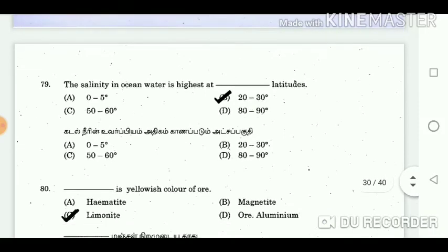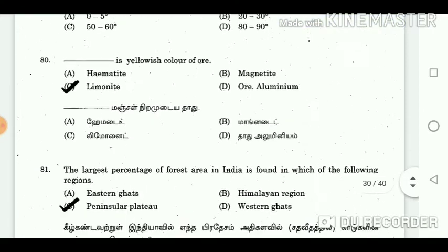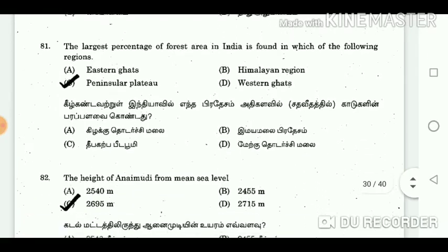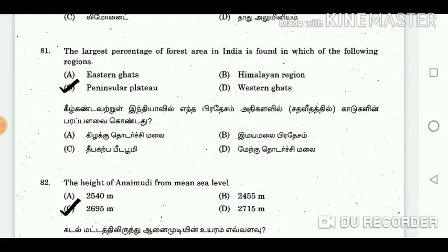Question 79: The salinity in ocean water is highest at which latitudes? Answer: 20 to 30 degrees. Question 80: What is the yellowish colour ore? Answer: Limonite. Question 81: The largest percentage of forest area in India is found in which of the following regions? Answer: Peninsular plateau.